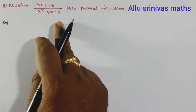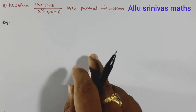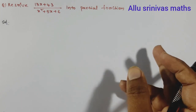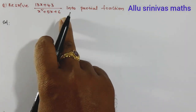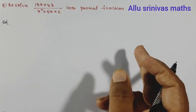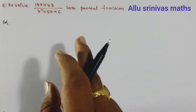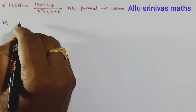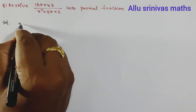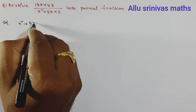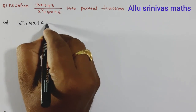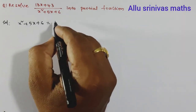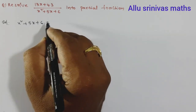Since we are asked to find the partial fraction, it may be written as the product of two linear factors. Let us find out the linear factors first in this case, called the factorization. First we write the quadratic polynomial x squared plus 5x plus 6.